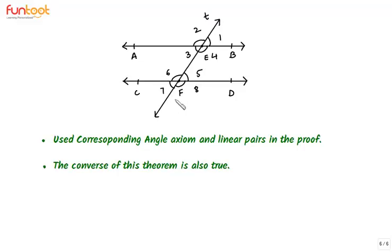The converse of this theorem is also true. That means if we have a pair of lines intersected by a transversal, and a pair of interior angles on the same side of the transversal is supplementary, then the pair of lines is parallel.